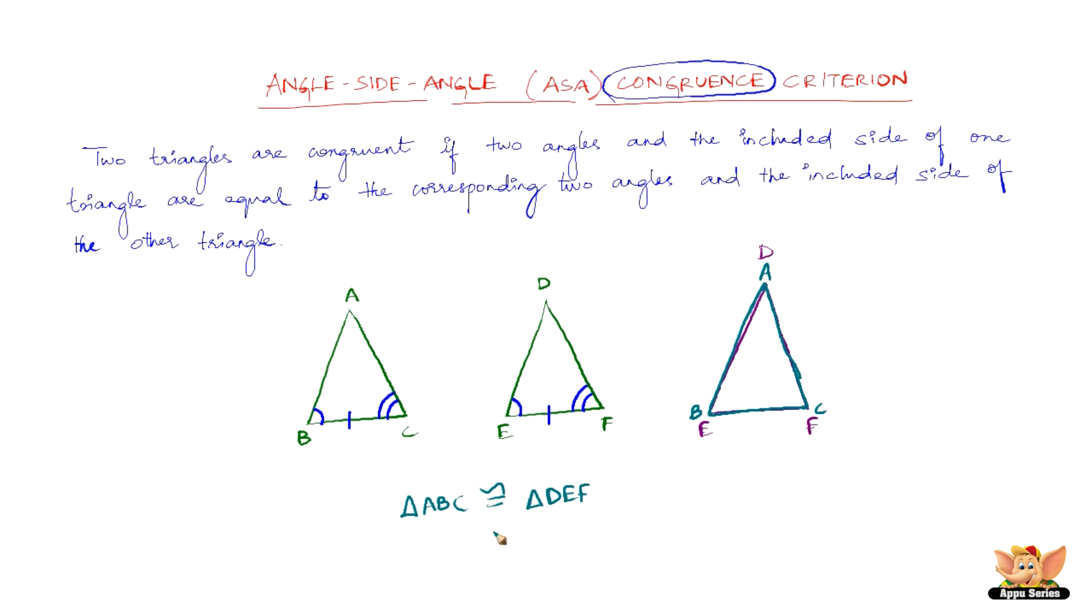There are various ways by which we can prove that two triangles are congruent to each other, but the angle side angle criterion is one of them.